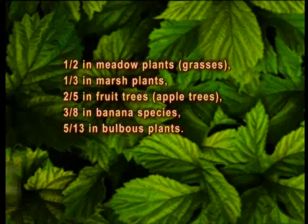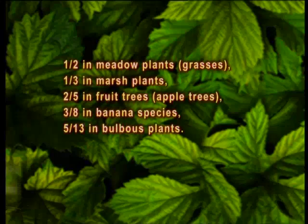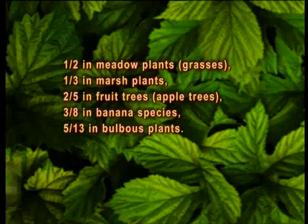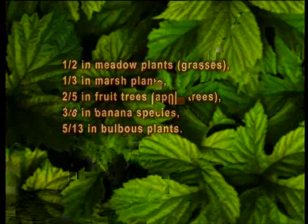Fractions peculiar to some plants are as follows: one over two in meadow plants and grasses; one over three in marsh plants; two over five in fruit trees such as apple trees; three over eight in banana species; five over thirteen in bulbous plants; and one over three in high-foliage plants.